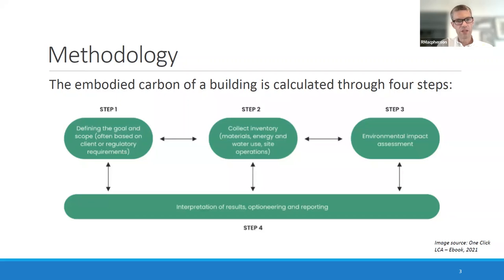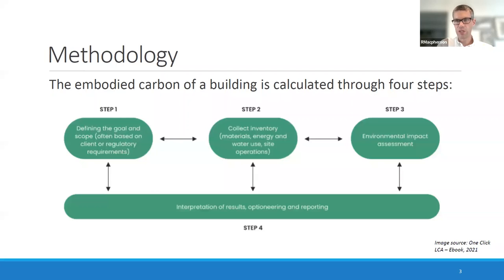We study embodied carbon through four steps, which I'll go into in more detail through this presentation. Embodied carbon is definitely an emerging field of study, and consensus is still building within the sector around how we do things. What I've presented is codified in international ISO standards, but it's pretty high level. The four steps are: define the goal and scope, collect the inventory, conduct the environmental impact assessment, and look at results, optioneering — otherwise known as reduction strategies — and reporting.